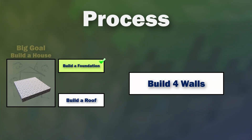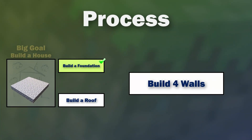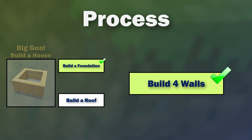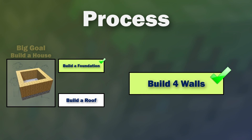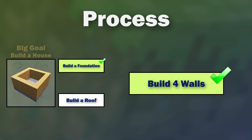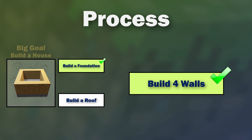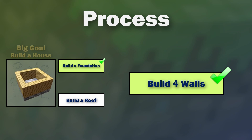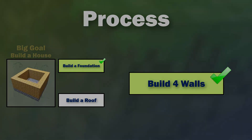Congratulations — if you've been following along, you've built your foundation and now your four walls. In video number three we're going to be looking at how to build a spiral roof or stepped roof to put on top of our house. Like and subscribe so you don't miss out on that, and I'll see you in the next video. Bye for now!